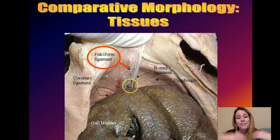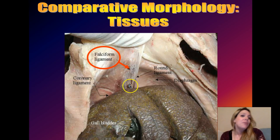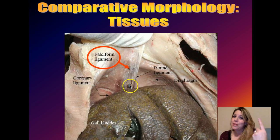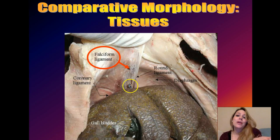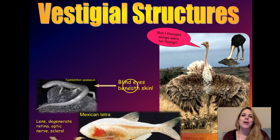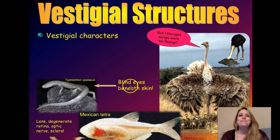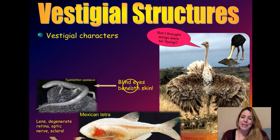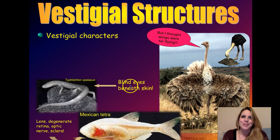So again, fascinating to look at comparative morphology as evidence for macroevolution and the diversity of life. But this is only one piece of evidence — keep that in mind. This by itself is pretty good evidence that all species descended from a common ancestor, but there's so much more evidence. Let's take vestigial structures or vestigial characteristics — these things are so cool.